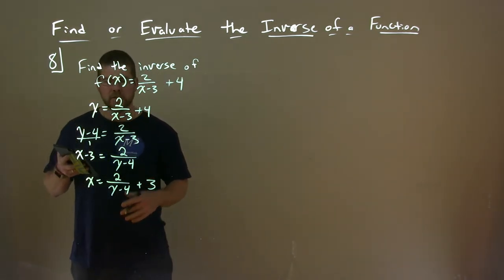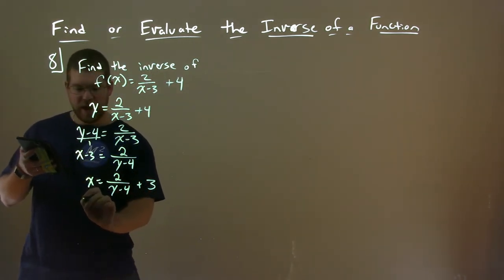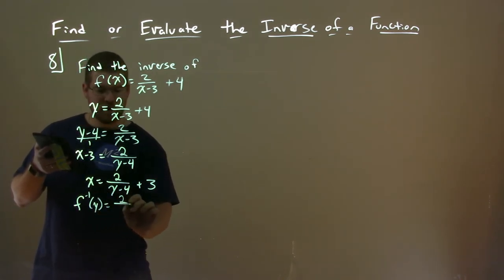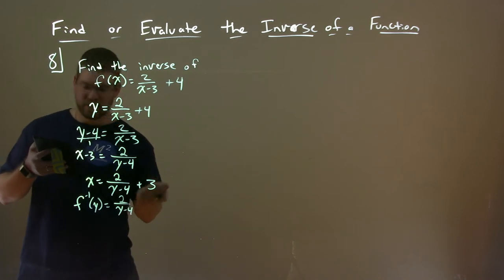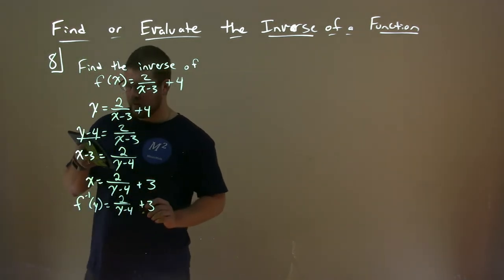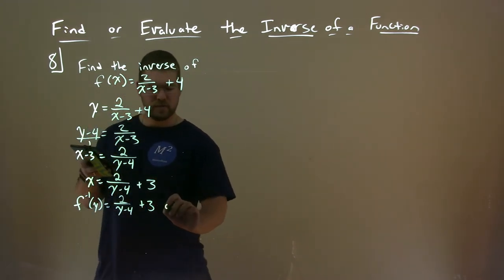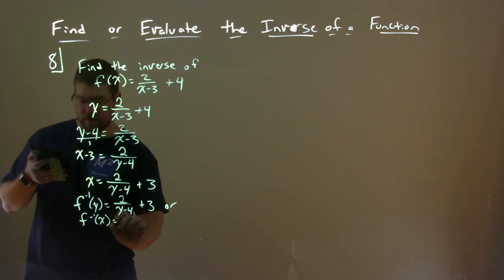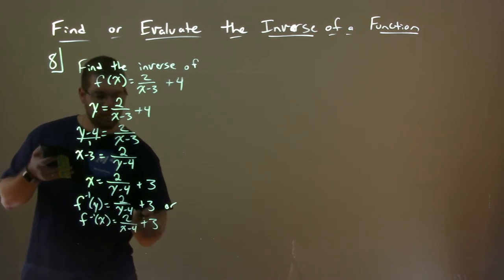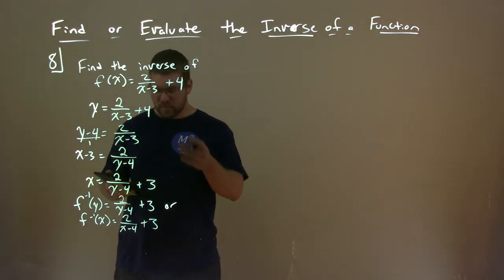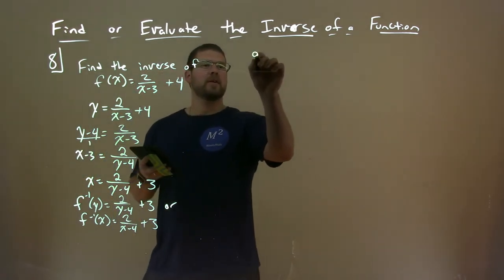And we have x equals 2 over y minus 4 plus 3. So we got x by itself. What does this mean? So the f inverse of y is equal to 2 over y minus 4 plus 3 right there. Or if we want to write it as such, we can say f inverse of x is equal to 2 over x minus 4 plus 3 by swapping the y's with the x's there. So let's go solve another one here. Number 9.